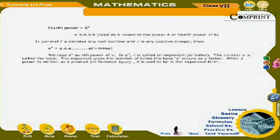In general, if a denotes any real number and n is any positive integer, then aⁿ = a·a·a·…·a (n times). We read aⁿ as the nth power of a. In aⁿ, n is called the exponent or index, and a is called the base. The exponent gives the number of times the base a occurs as a factor. When a power is written as a product in factored form, it is said to be in expanded form.